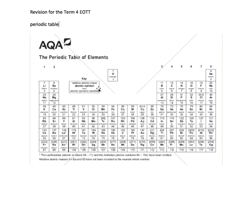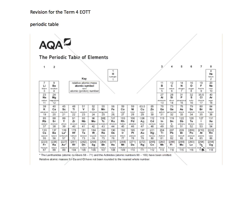On the periodic table, you have your groups vertically — group 1, group 2 — and here we have our transition metals, which we're not going to talk about particularly at the moment. And we have groups 3 through to 7, and group 0 on the end, sometimes called group 8. So you have the halogens in group 7, the noble gases in group 0 or group 8, the alkali metals in group 1, and your alkaline earth metals in group 2.